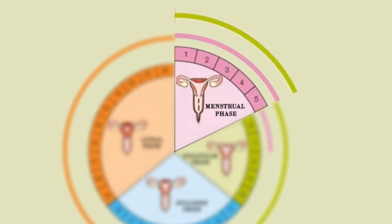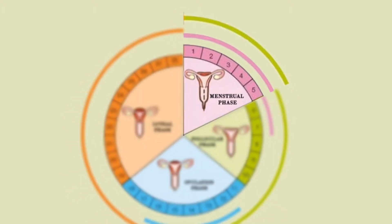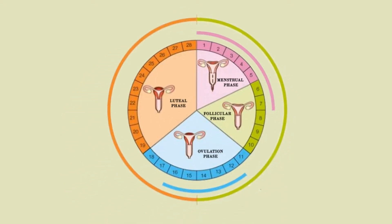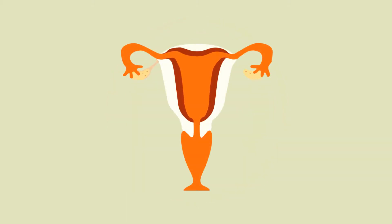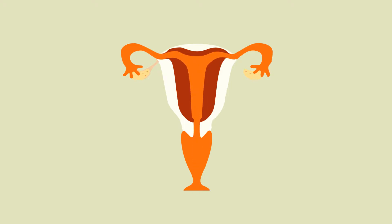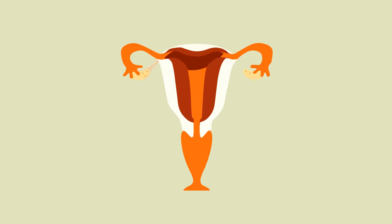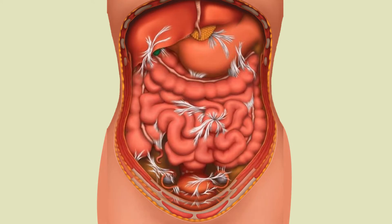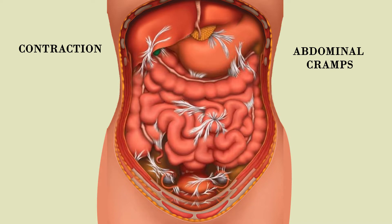Menstrual phase, day 1 to 5. This phase begins on the first day of menstruation and lasts till the fifth day of the menstrual cycle. The uterus sheds its inner lining of soft tissue and blood vessels, which exits the body from the vagina in the form of menstrual fluid. A blood loss of 10 ml to 80 ml is considered normal. You may experience abdominal cramps caused by the contraction of the uterine and abdominal muscles to expel the menstrual fluid.